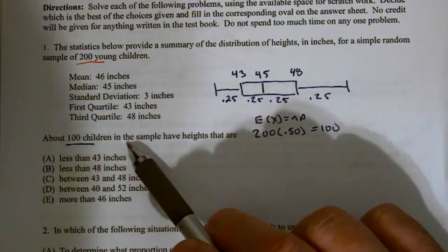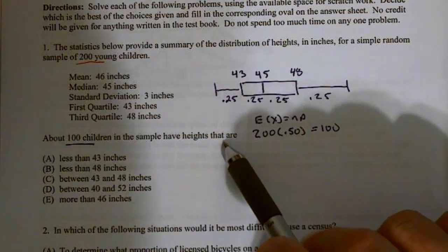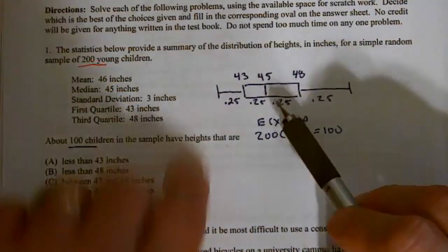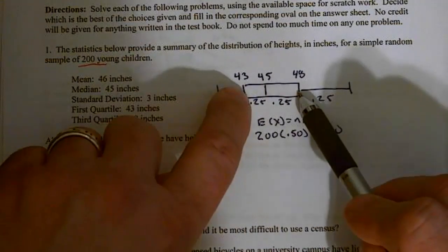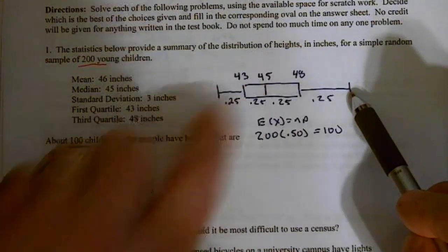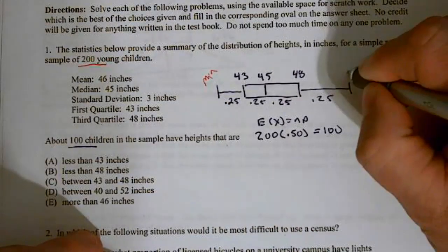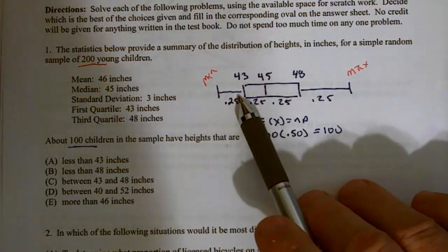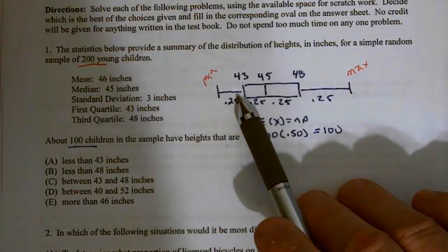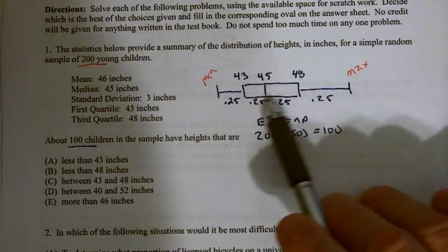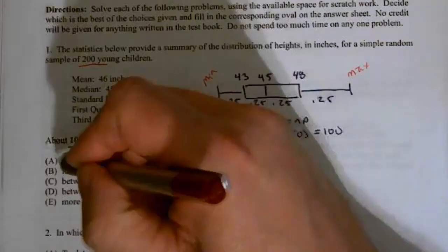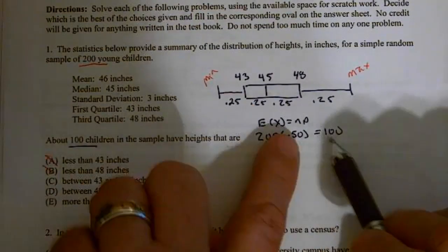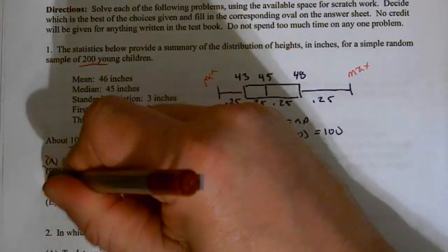It says about 100 children in the sample have heights that are. Well basically, we have a sample of 200, so 200 times 0.5 equals 100. So that would be about 100, this would be about 100, and this would be about 100, where this is my min and this is my max. So less than 43? No, we'd expect about 25 to do this. Less than 48? Well, less than 48, 48's way up here, so that's about 75%, so that's way too much. Between 43 and 48? Well sure enough, that's about 50%, and 50% of 200 equals 100. So I'm liking C for number one.